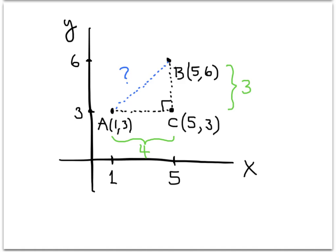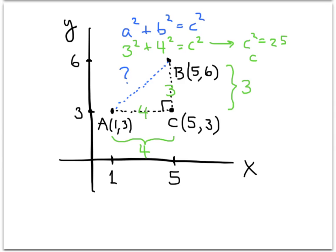So what I have now is a triangle, and I know two of the three sides of this right triangle — this side is 4 and this side is 3. I'm going to use the Pythagorean theorem: a² + b² = c². So 3² + 4² works out to be 25, meaning c² = 25, and therefore c = 5. We figured out the distance we're looking for is 5.